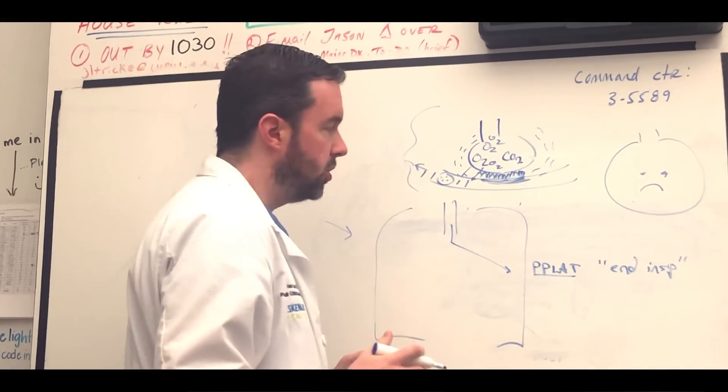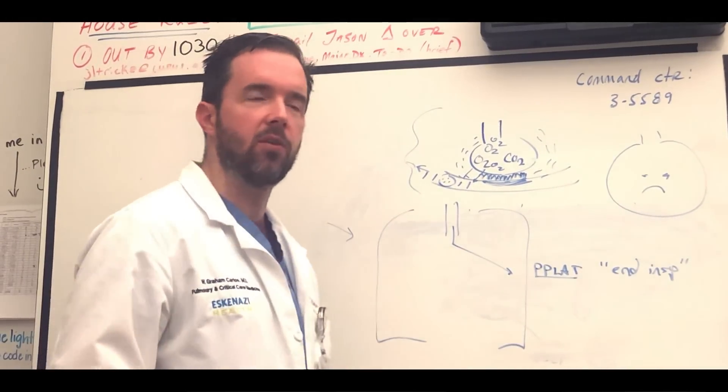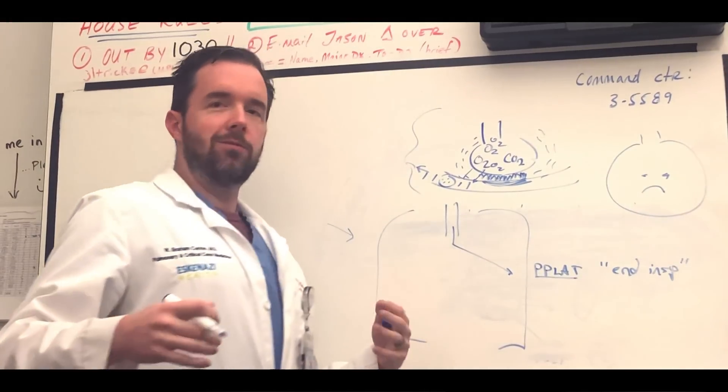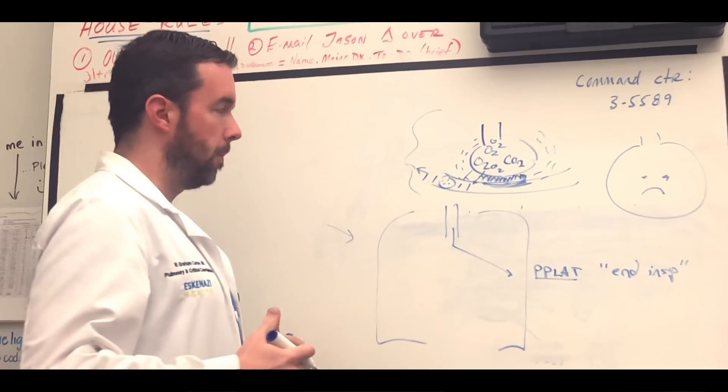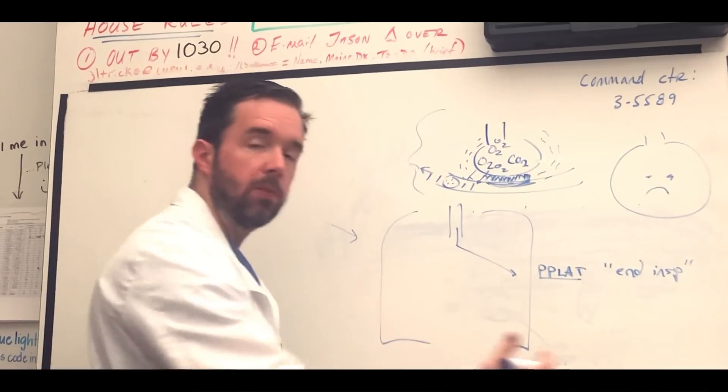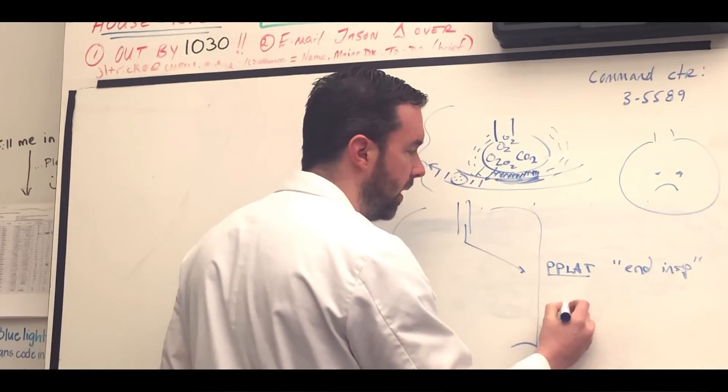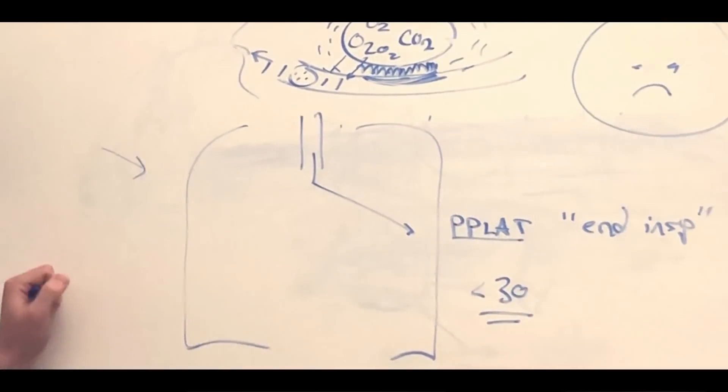P-plat is the end inspiratory pressure. So this is the pressure at the end of inhalation when the lungs are full. So if you all take a breath in right now and hold it, that's kind of your plateau pressure. It's a measure of the compliance of the lungs, the stretchability, as it were, of the lungs. Typically our goal is to keep P-plat pressures less than about 30. We're happy with that.